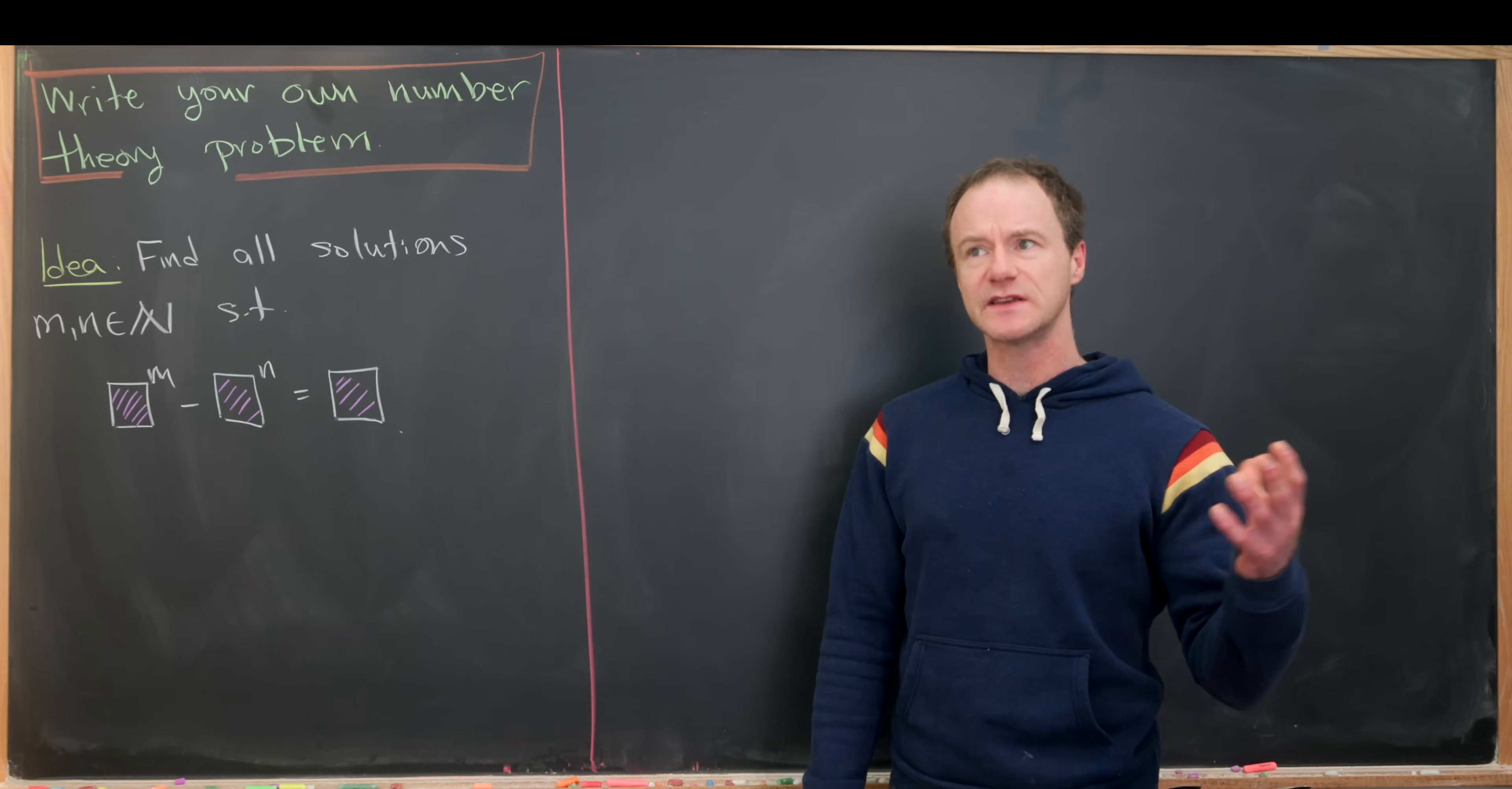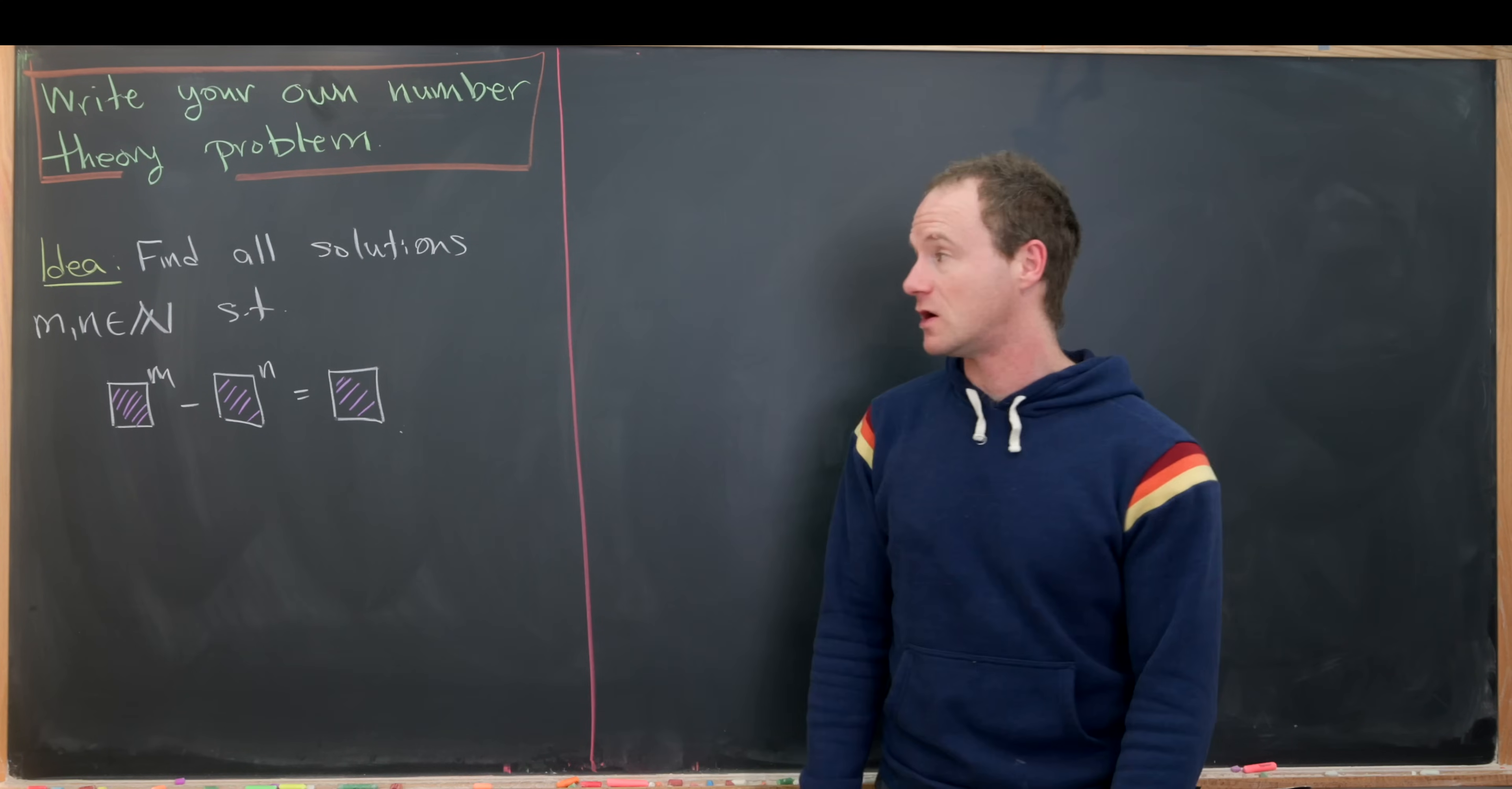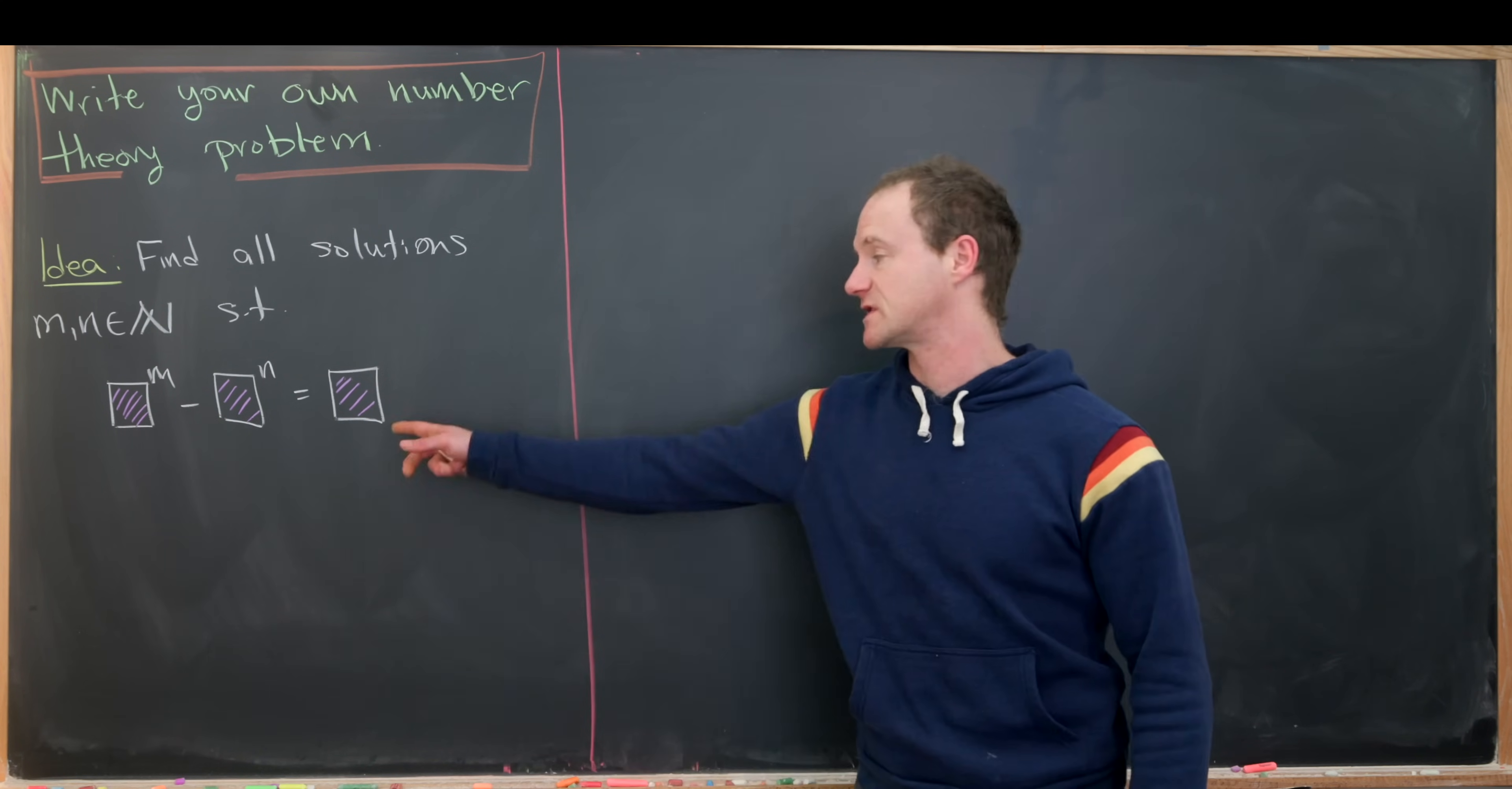We need to start with some basic structure for our equation, which we'll be solving in this case. My idea here is to find all solutions m and n, which are natural numbers, satisfying the equation: something to the m minus something to the n equals something.